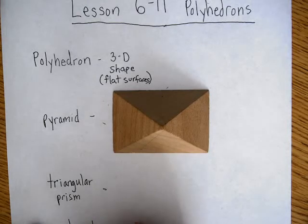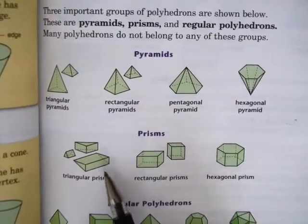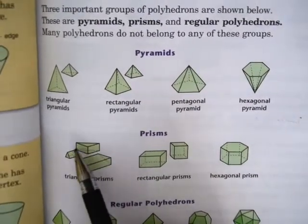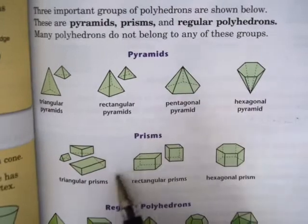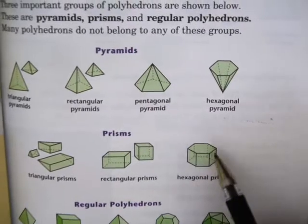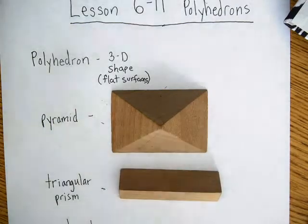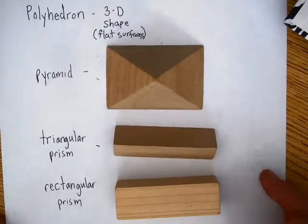For a triangular prism and a rectangular prism, here are some examples from the reference book for Grade 3 Everyday Math, page 115. A triangular prism is a 3D shape in the shape of a triangle. A rectangular prism is a 3D shape where the sides are rectangles. There's also a hexagonal prism — just some examples of prisms.